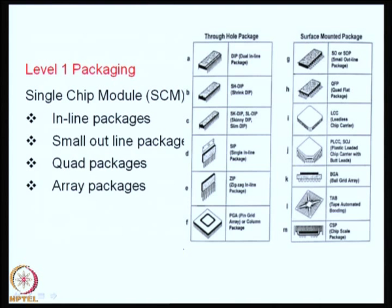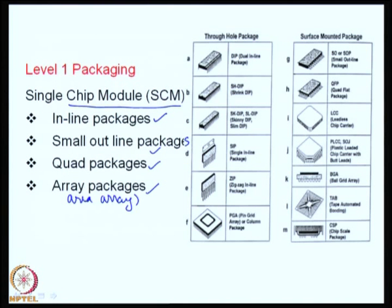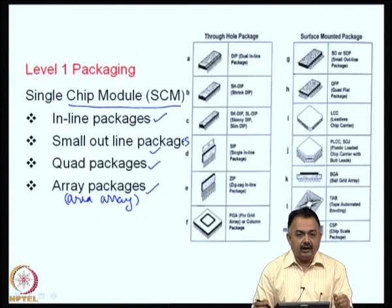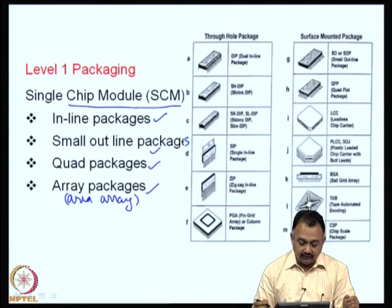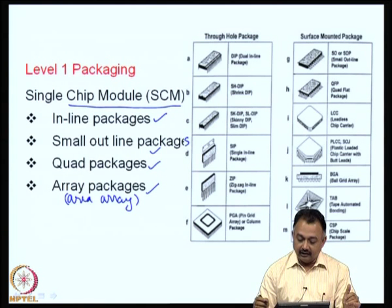The following activities will cover systems packaging. Level 1 packaging involves the formation of packages from dies. You have what is known as a single chip module (SCM), or single chip package. The classifications are in-line packages, small outline packages, quad packages, and array packages. There is also another term called area array packages, which is the same as array packages. We will carefully examine what each one means, using some samples to refresh your understanding.